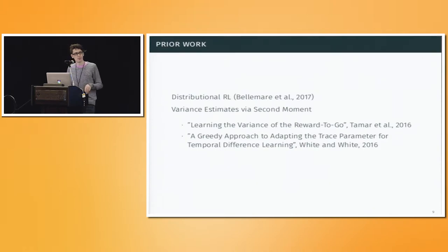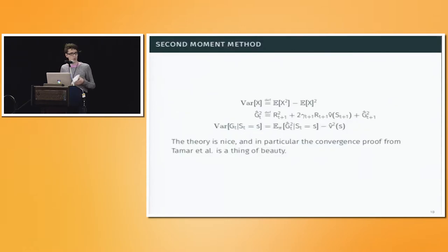There's been a bit of recent interest in this topic about learning more than just the expected value of the return. There's the distributional RL paper from Bellemare et al., and that one is very general. It covers learning the distribution, and from that you can compute all sorts of statistical quantities. There's been some people that have specifically addressed learning the variance of the return, but they use a second-moment method: learning the variance of the reward to go by Tamar, and greedy approach to adapting the trace parameter for temporal difference learning by White and White, also co-authors on this paper. They do it by just saying variance is going to be the second moment minus the expected value squared.